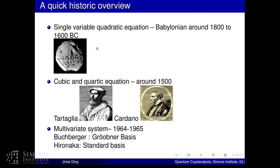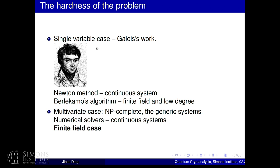Looking at the history of solving equations: we could solve single-variable degree-two equations about 3500 years ago. Around 1500, we could solve degree three and four equations, and then progress stopped. For multivariate systems, the first algorithm was given by Buchberger in the 1960s. The idea was known earlier but not developed computationally. For single-variable polynomials, once you reach degree five, there is no closed formula. Newton's method handles continuous systems. For finite fields, Berlekamp's algorithm works for low-degree polynomials. For multivariate cases, the problem is NP-complete in general.